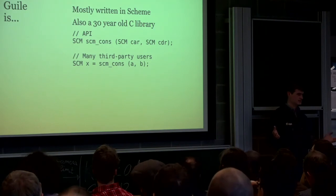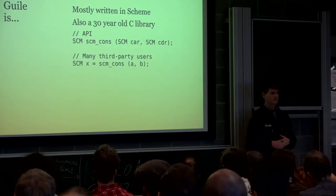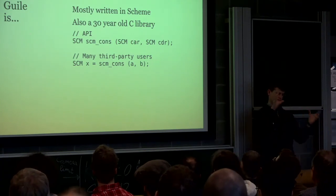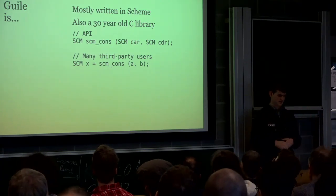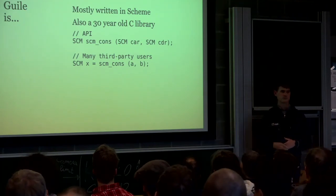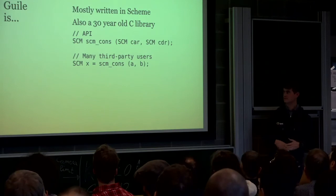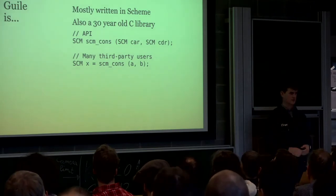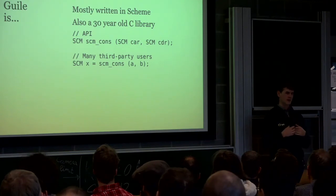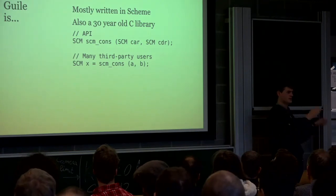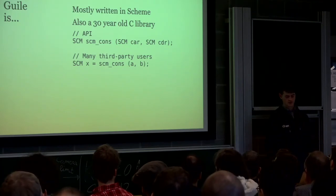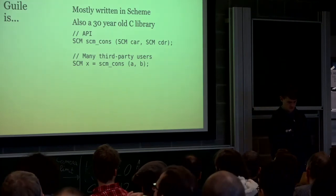Guile is an implementation of Scheme, as most people know. If you look at it and try to determine its composition, you would notice that there's a big C library that's part of it. It has an API — there's a cons function which takes some arguments and returns a value. There's a lot of code inside Guile that uses this API, and a lot of code in external projects that also use this API, so it's exposed to third-party users.